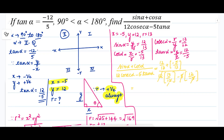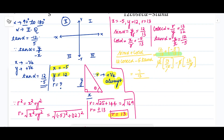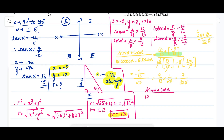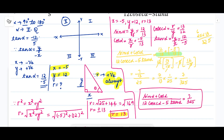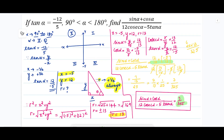In the numerator, with common denominator 13, we get (12 - 5)/13 = 7/13. In the denominator, 2×(13/12) gives 13/6, and -5×(12/(-5)) gives +12; combined that gives 13 + 12 = 25. So the expression becomes (7/13) ÷ 25 = 7/13 × 1/25 = 7/325. The final answer is 7/325.